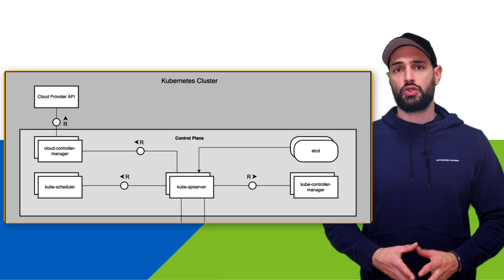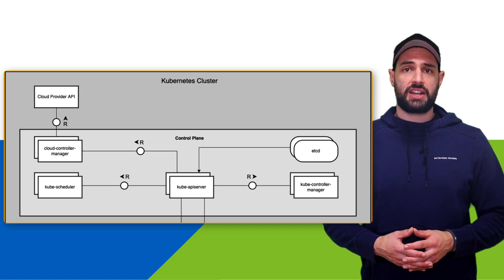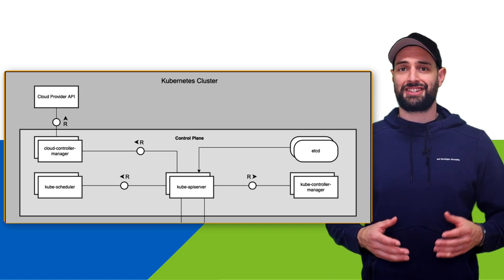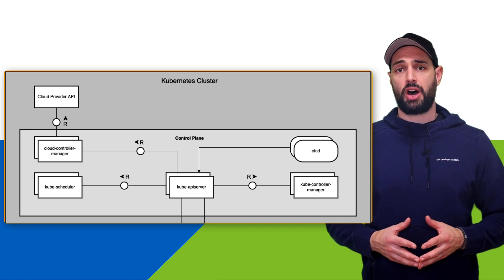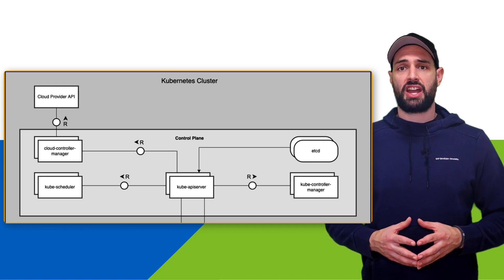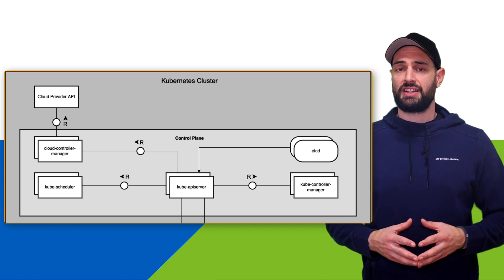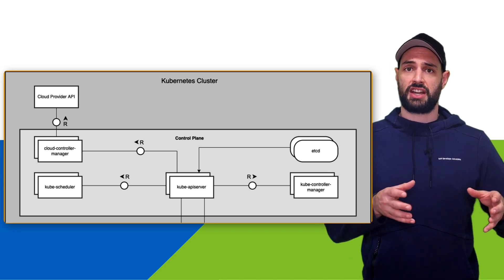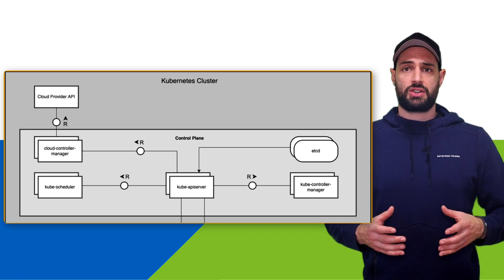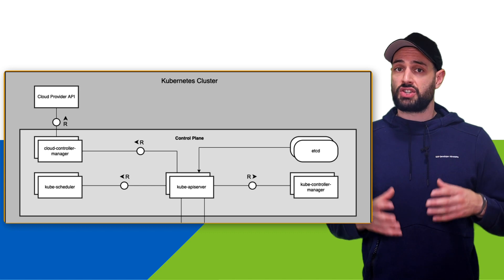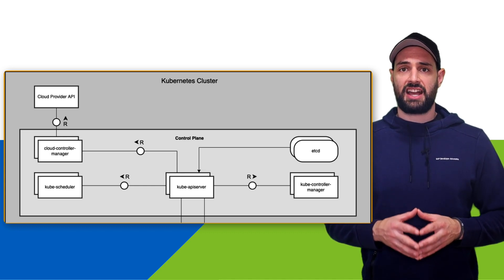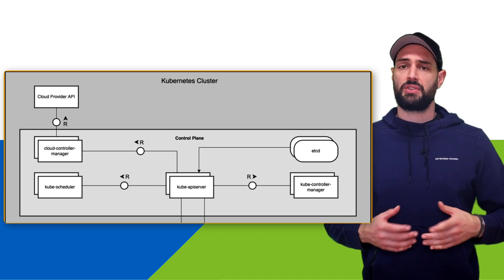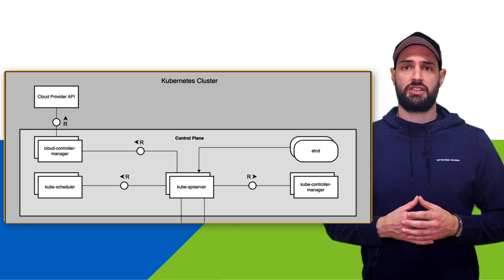Next we have the Kube scheduler. The Kube scheduler watches for newly created pods which have no node assigned yet. A pod is assigned to a node, and the Kube scheduler makes sure that such pods get assigned to a node so they can start and run your application container images. There are different types of factors taken into account for this assignment.